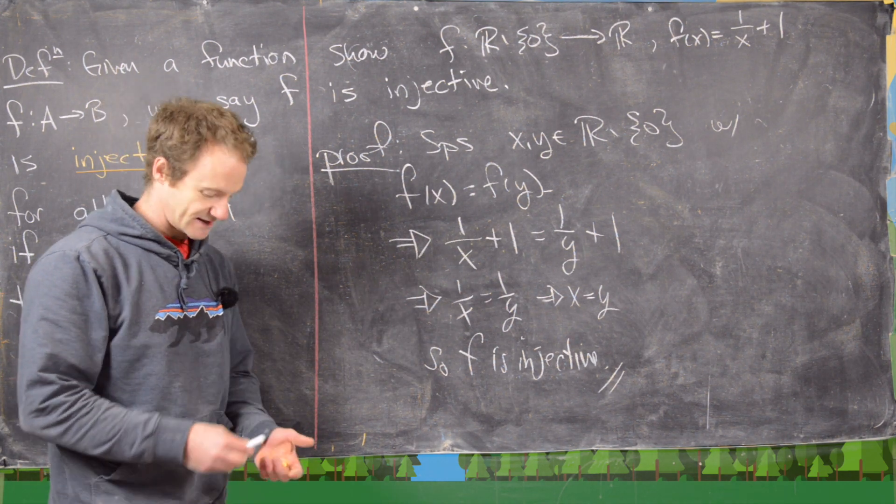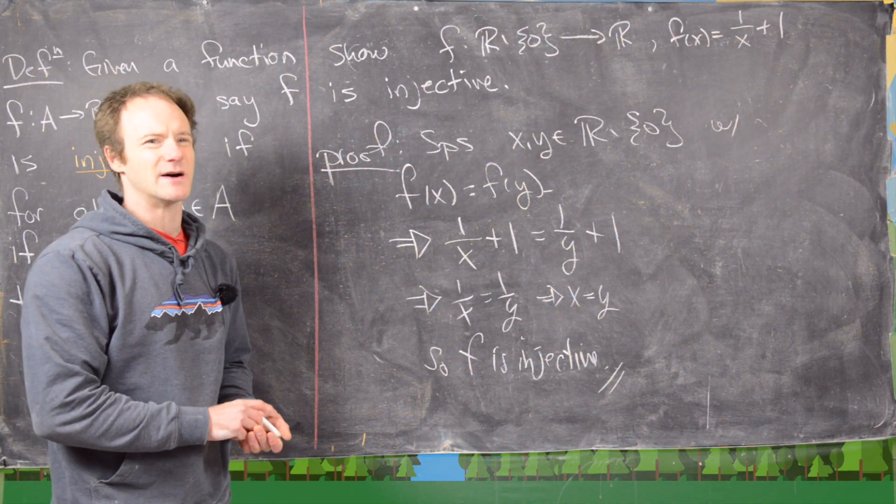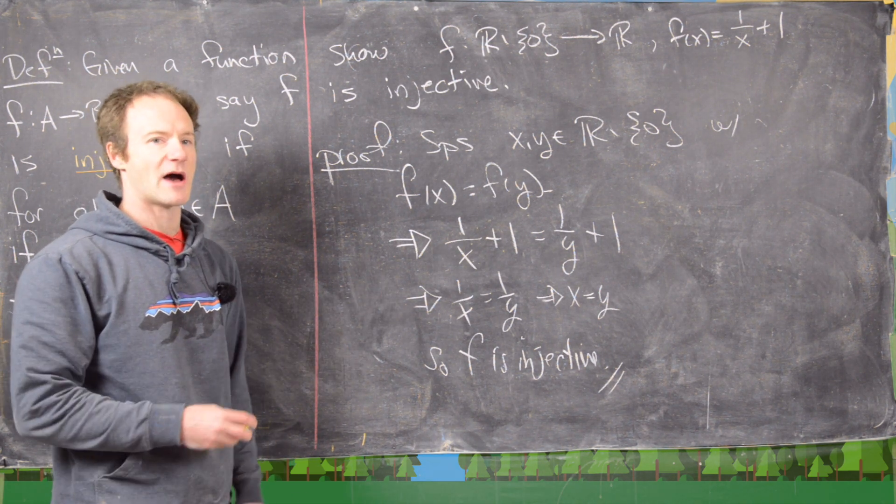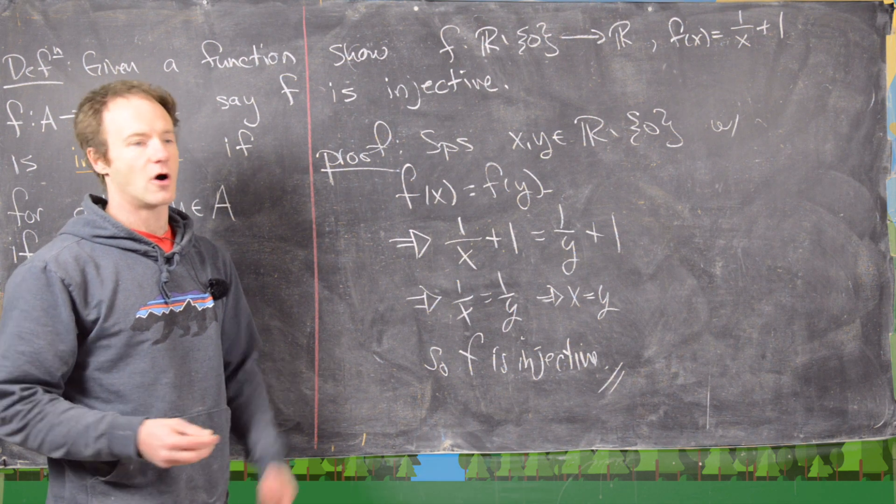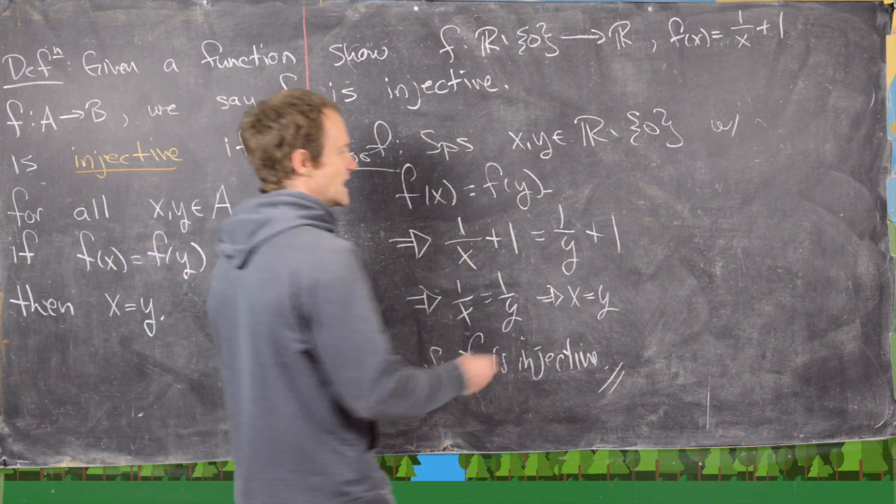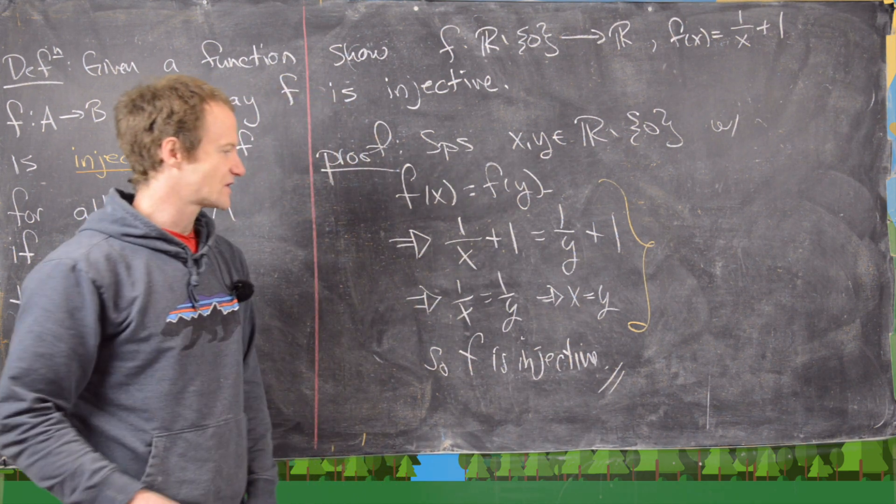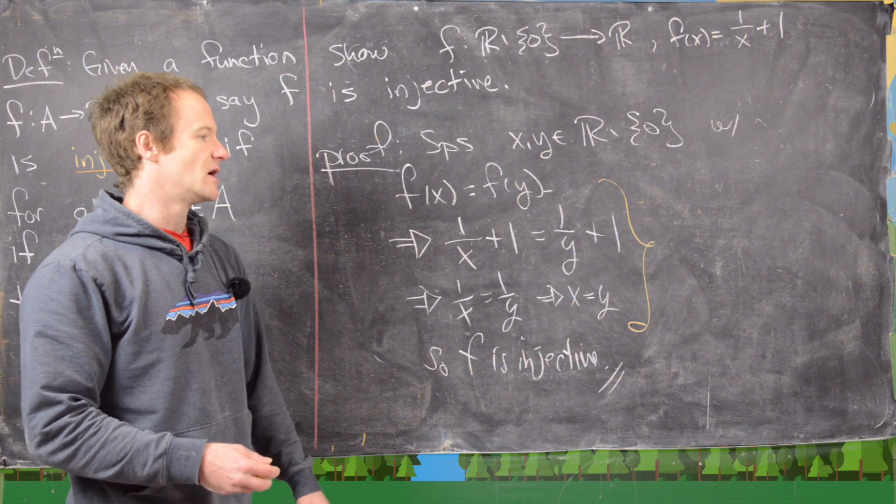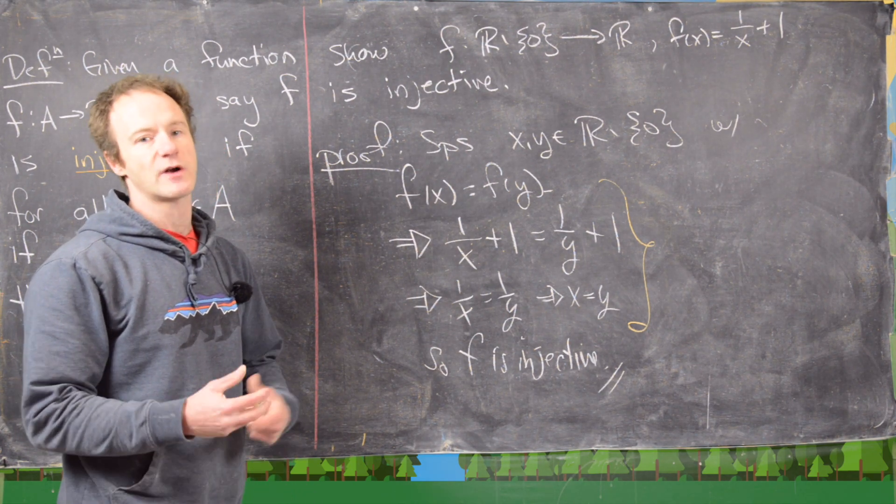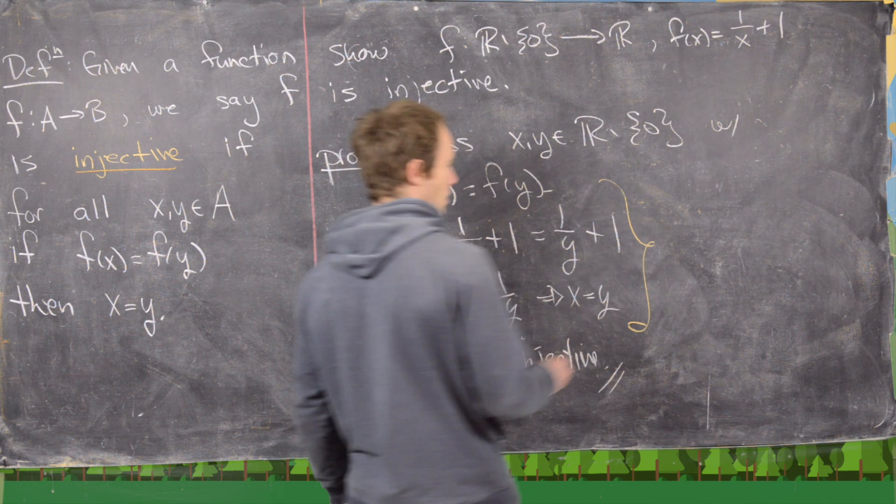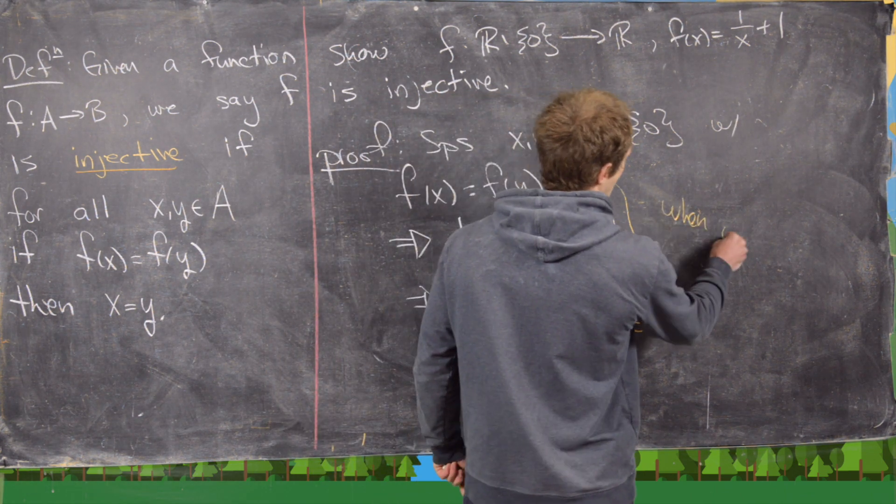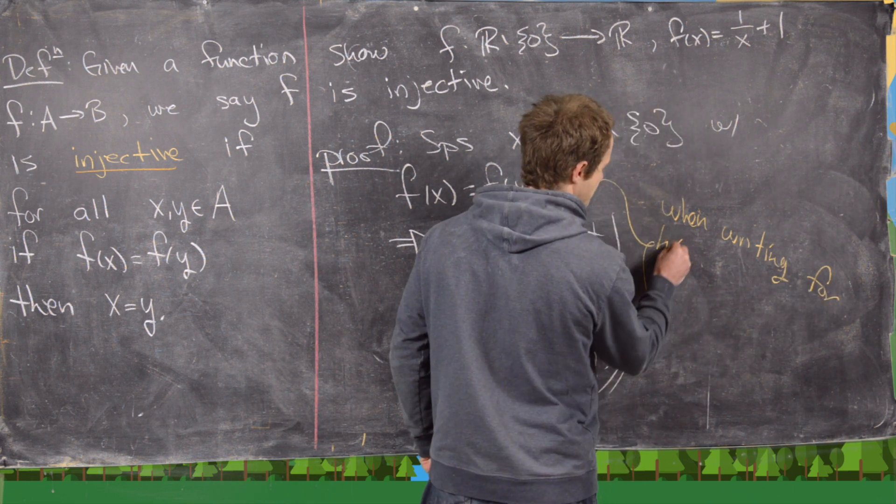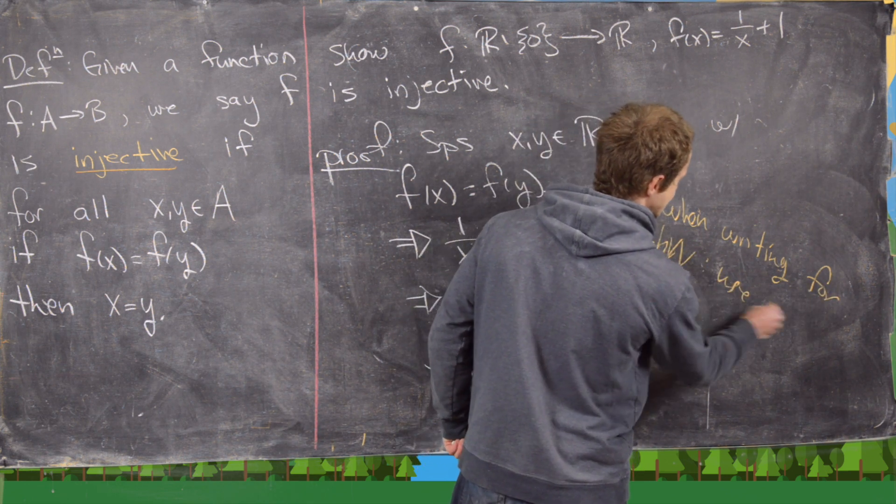And before we move on to the next example, I want to make an important point about presenting proofs on a chalkboard and talking them out verbally versus writing them down for a homework exercise. And if you were to do such an exercise in homework, you would replace this shorthand that's very common for use on the chalkboard and very appropriate for use on the chalkboard with words. So in other words, when writing for homework, here you would use complete sentences.